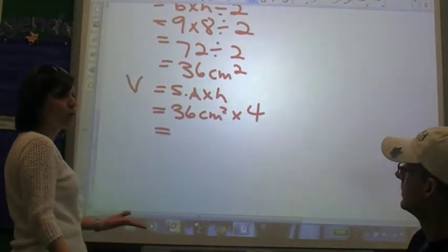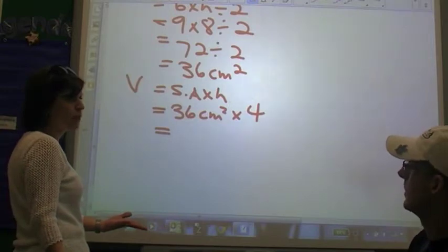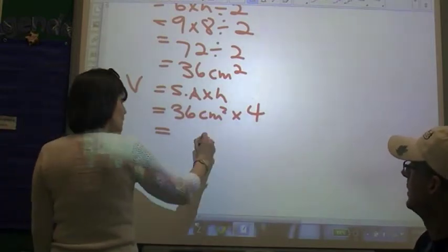So now all we need to do is multiply, correct? 36 times 4 is 24.